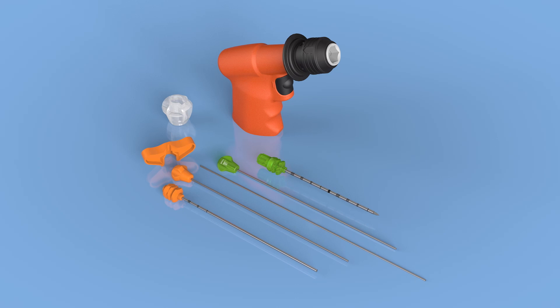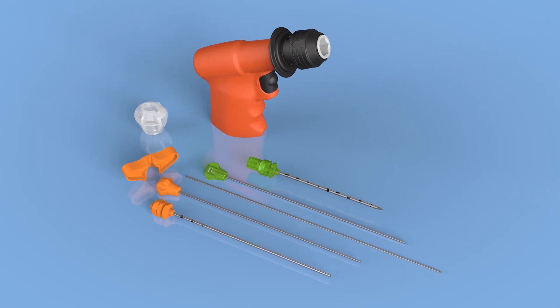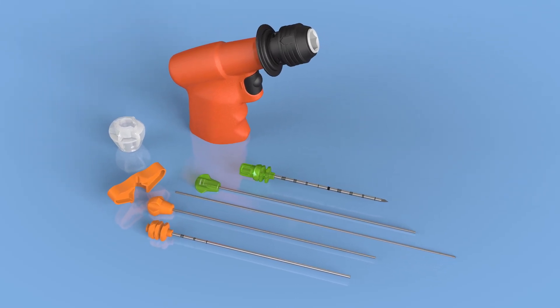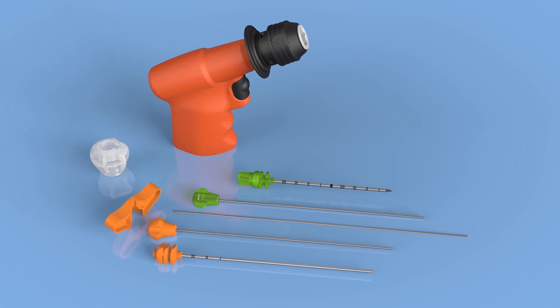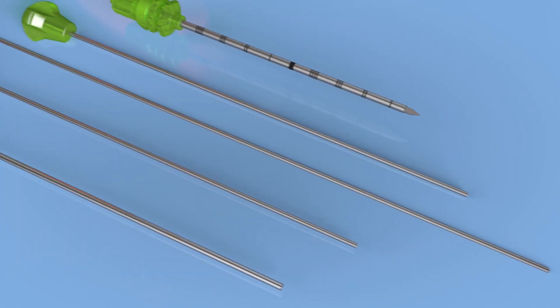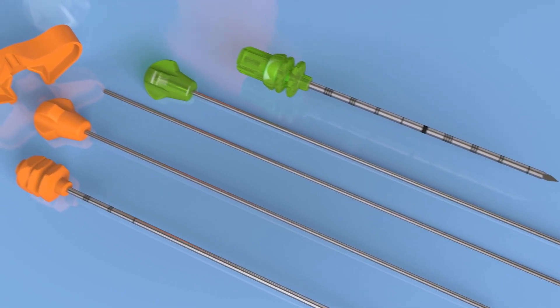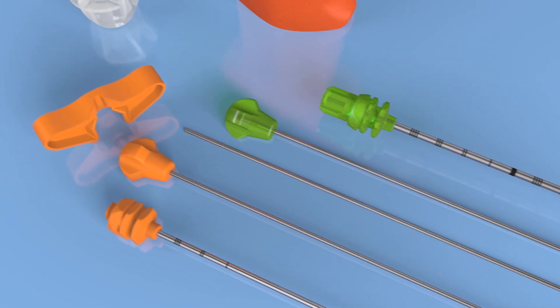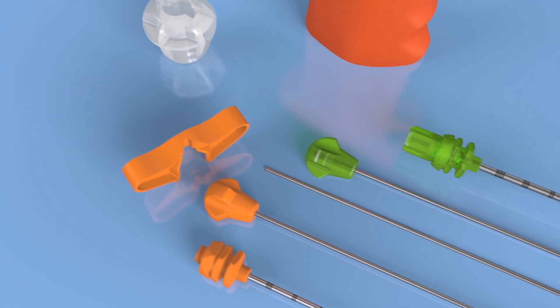The Aero OnControl Powered Bone Lesion Biopsy System is the first major advance in bone and bone marrow sampling procedures in more than 40 years, helping to effectively, safely, and quickly obtain high-quality specimens, even from dense and hard-to-reach bone.